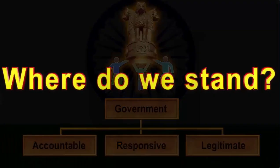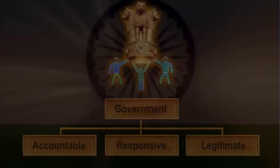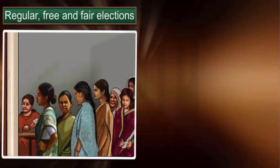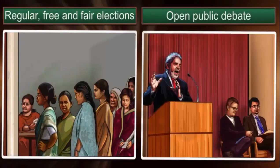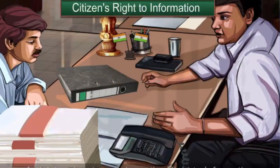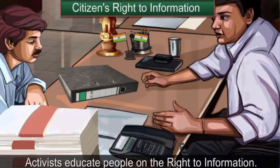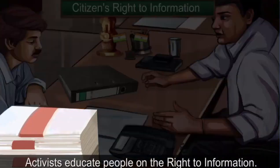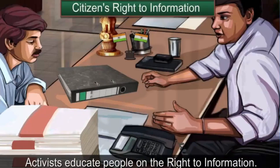So, where do we stand on all these measures? Democracies have displayed a mixed record on each measure. We do have regular elections and also public debates, but how effective are the elections and debates? Largely, democratic governments do not have a very good record when it comes to sharing information with their citizens.